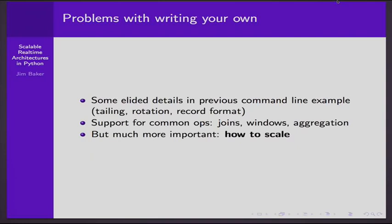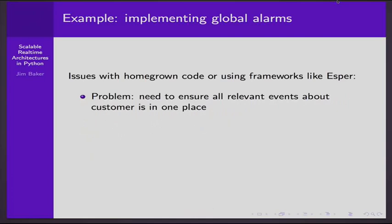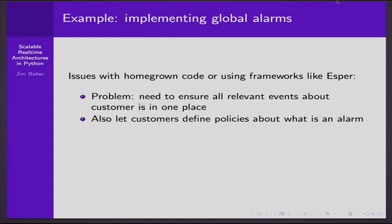At Rackspace, we're using a framework for complex event processing called Esper, which has very much the same properties, or again, this homegrown code. Here's the problem: you need to ensure all relevant events about a given customer are in one place. If I'm going to know something about a given customer, I need to bring all the relevant information together — we have to have some locality. In terms of this Rackspace example where we're implementing global alarms, we want to allow customers some degree of customization, so we don't want to make it too hard-coded, then run some computation.